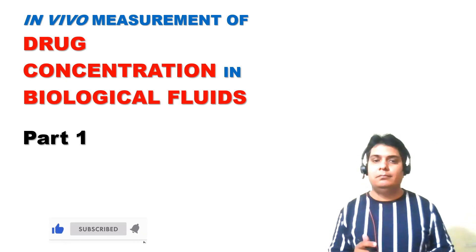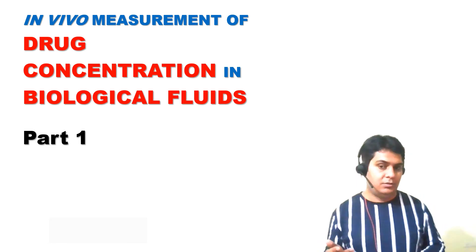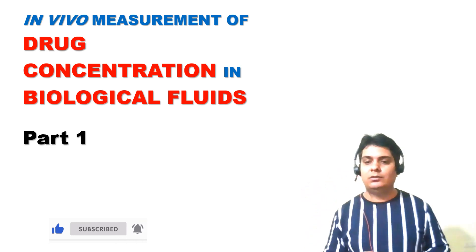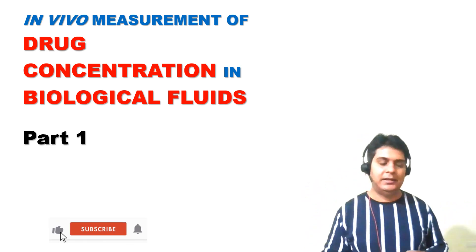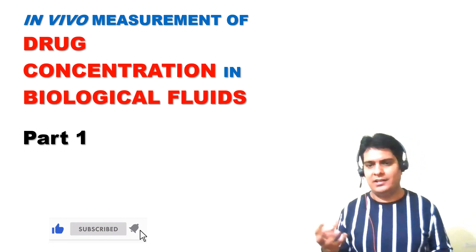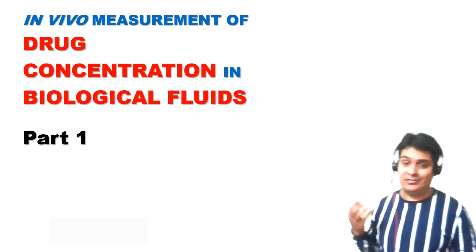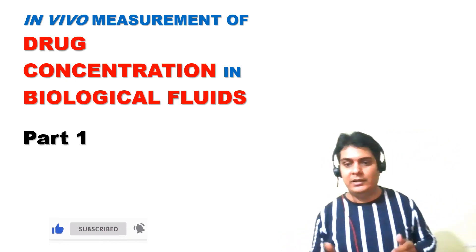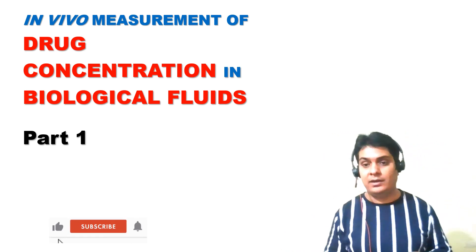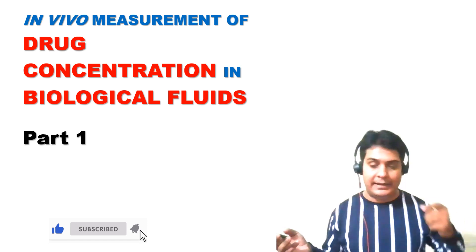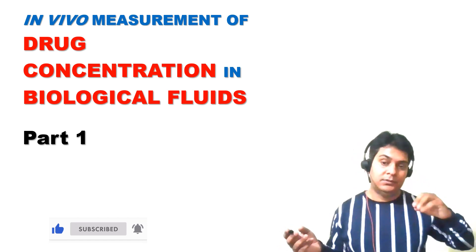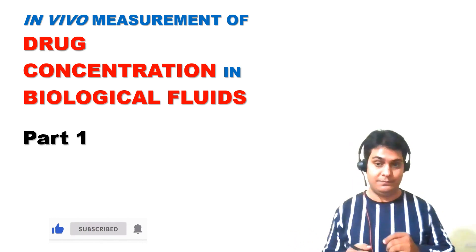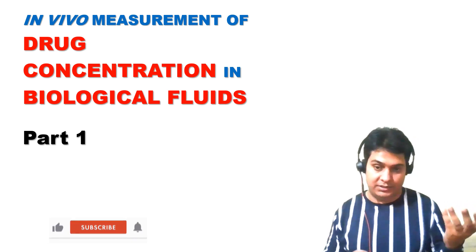This method is basically used to determine the drug concentration in biological fluids. We have a general concept that we have to calculate the rate and extent at which the drug is absorbed into systemic circulation, and finally we have an idea of how the bioavailability will be. So in this lecture we are going to discuss how drug concentration in biological fluids can be measured.